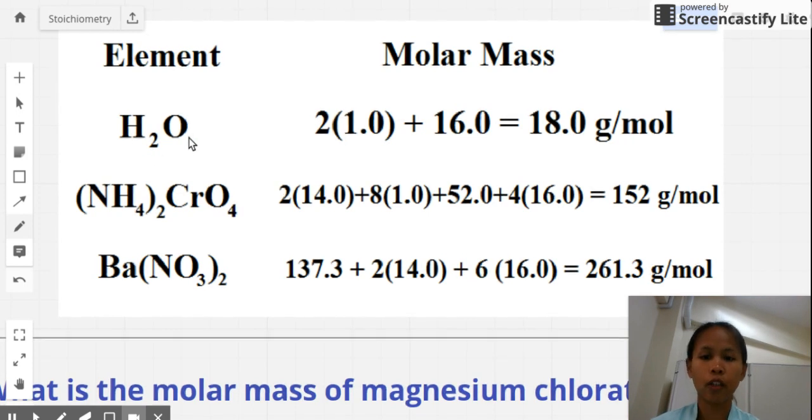So there are two hydrogen, and if you don't see anything, that's understood to be one. So you have two hydrogen. Multiply it with the molar mass of hydrogen in the periodic table. So you look at the periodic table for the mass of every element plus one times the mass of oxygen, which is 16. And so you multiply the two to the one, and the product of that will be added to 16. So you'll get a total of 18.0, and the unit for this should be grams per mole, because you're calculating for the molar mass.